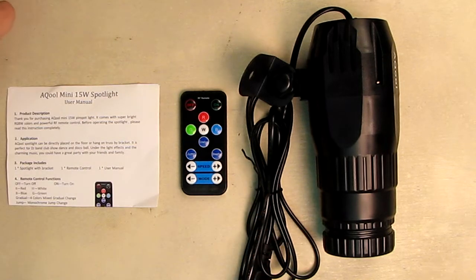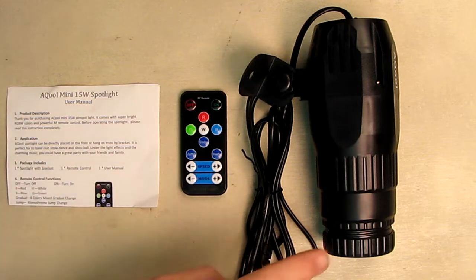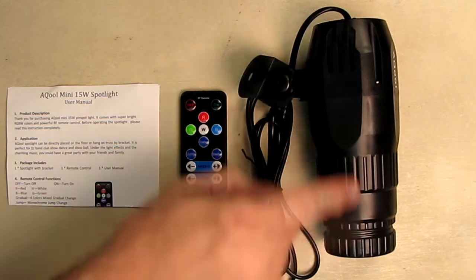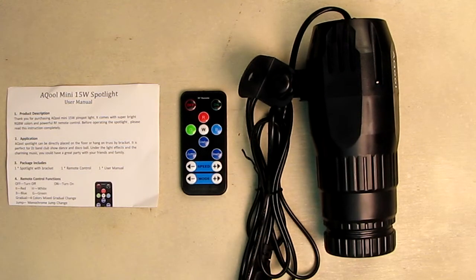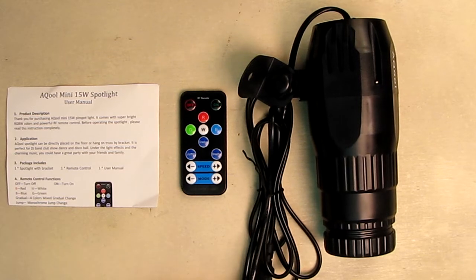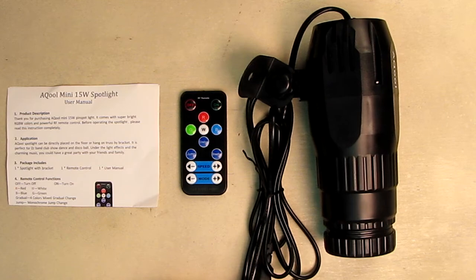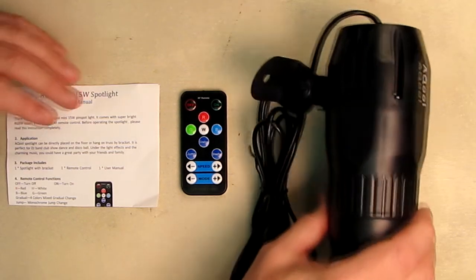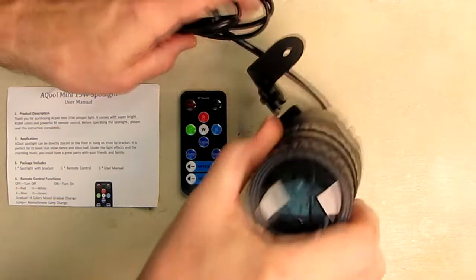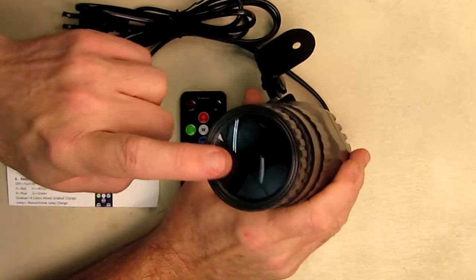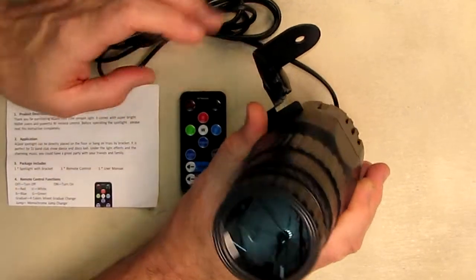You can also adjust the focus with this wheel right here. This only weighs 0.94 of a pound and is 8.5 by 4.1 by 5.4 inches. It works from 100 volts to 240 volts and has the USA plug. Another thing unique about this is it has a fully glass lens, and that's really nice quality.